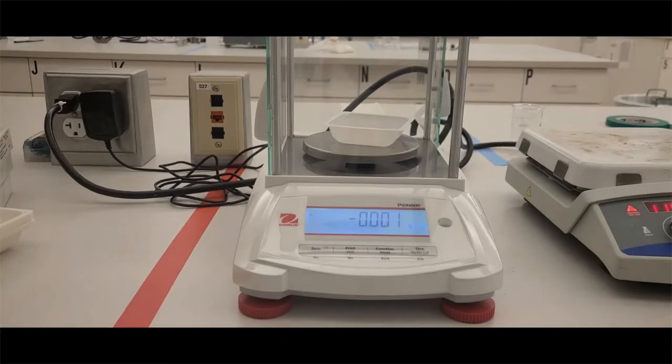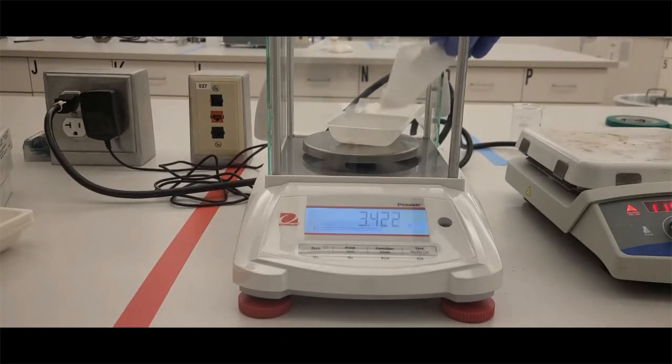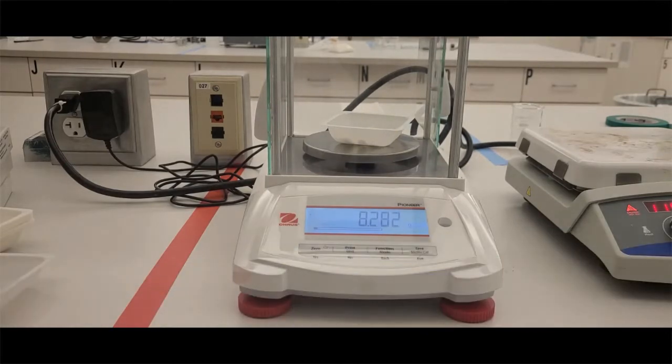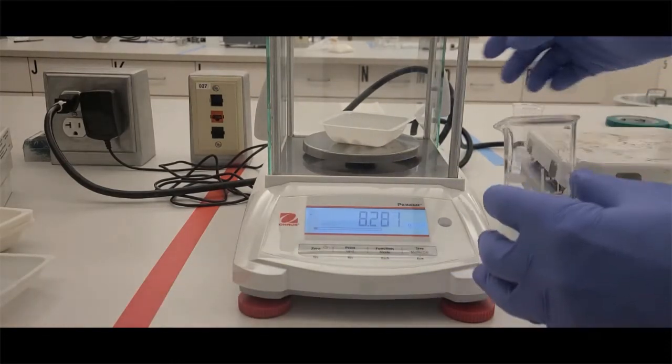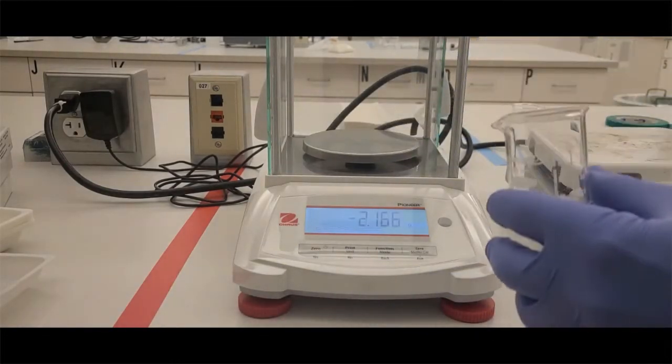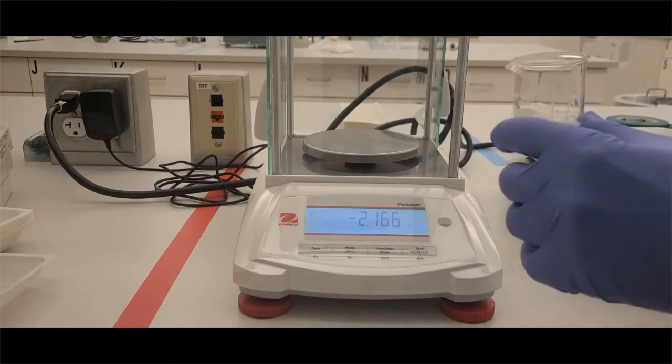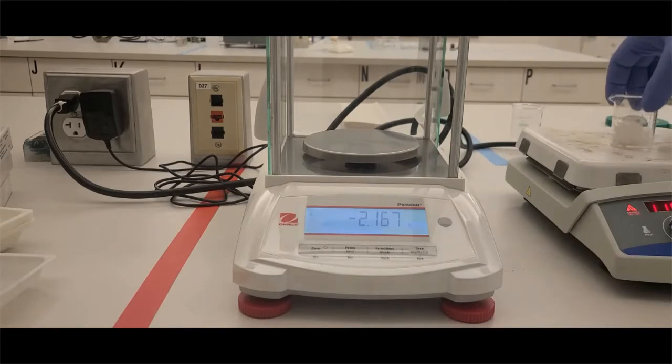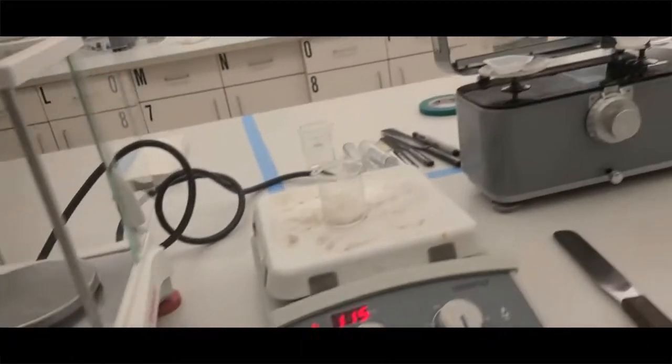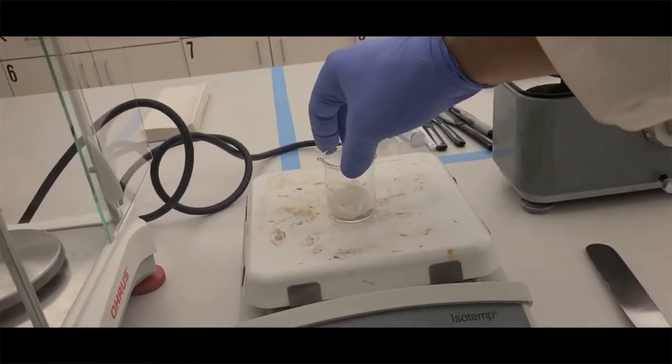Next, you're going to weigh out the amount of base we need to fill at least three suppositories. We're looking to find the blank weight of a suppository. To do that, we're going to assume about two grams per suppository. We need three plus one extra, so we're going to weigh eight grams, roughly. We're going to put it in a beaker, put it on our hot plate, and let that melt.